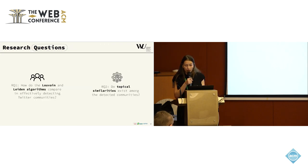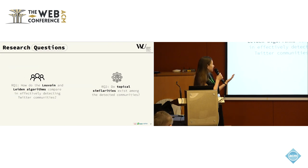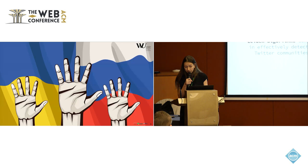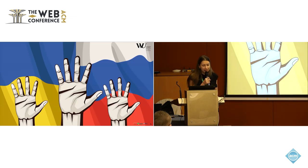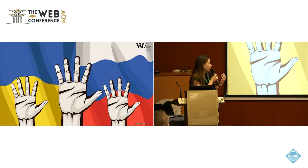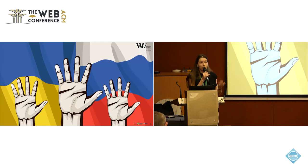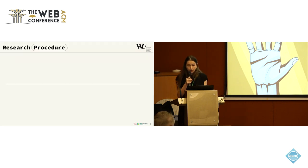Our research was guided by two questions: how do Louvain and Leiden algorithms compare in effectively detecting communities, and do topical similarities exist among those detected communities? For context about the data: in early 2022, the Ukraine war had just begun, and our focus is exactly on this initial phase. The directed and weighted network was scraped using the Twitter API from this initial phase of the Ukraine war.